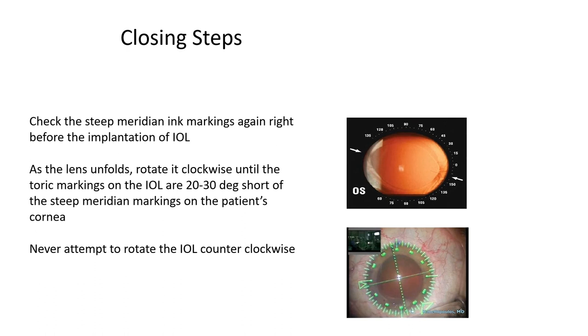A study published in the British Journal of Ophthalmology by Professor Minipatch showed that most lens rotations happen in the first one hour, then within the first week, and then within the first month in that order. Therefore, after implanting the toric IOL, ask the patient to lie down for at least one hour so the lens settles — this is the most critical period for preventing lens rotation and ensuring accurate astigmatism correction. Thank you very much for your attention.